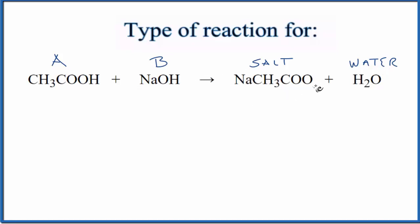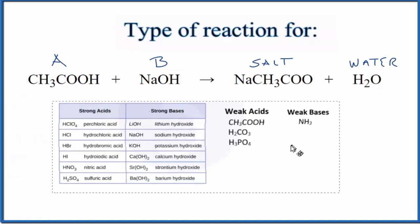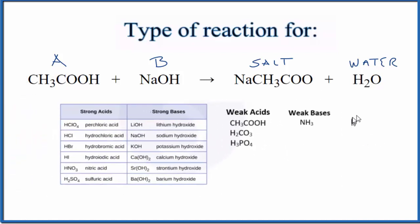It's helpful to memorize this table of common acids. When we look at our table, we see acetic acid - that's a weak acid. And down here, NaOH, sodium hydroxide - that's a strong base. This table is useful to memorize as you go on in chemistry.